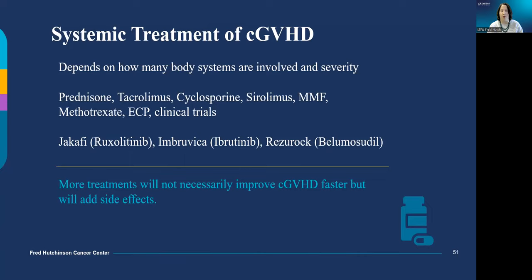We have many systemic therapies for chronic graft-versus-host disease, many of which may be familiar from acute GVHD. We use prednisone, tacrolimus, cyclosporine, sirolimus, and MMF to treat acute graft-versus-host disease. Oral methotrexate is used for chronic GVHD. ECP — extracorporeal photophoresis — is a procedure in our apheresis suite where blood is spun in a centrifuge to separate cells; the T cells are exposed to UV light to make them less active, and then the blood is infused back into you. We always have clinical trials, and recent trials have resulted in FDA approval for new treatments: Jakafi, Ibrutinib, and Rezurock for chronic graft-versus-host disease.